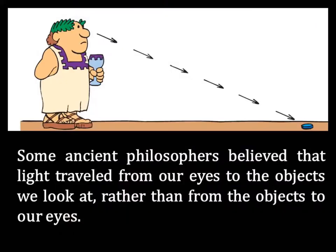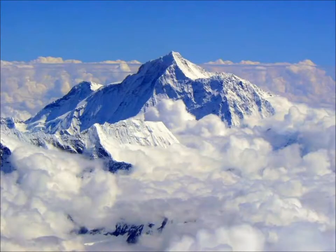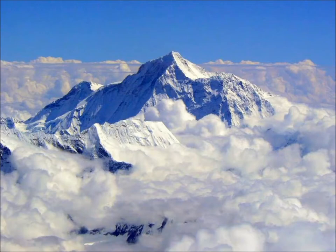Some ancient philosophers believed that light traveled from our eyes to objects we looked at rather than from the objects to our eyes. If that were true, then this giant picture of Mount Everest would be emitting light, and our eyes would be shining the light on it. It would be a massive amount of energy that you would need to use.